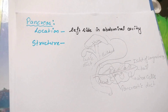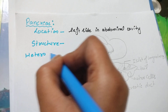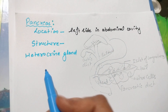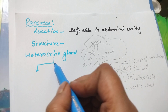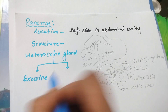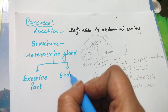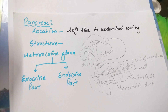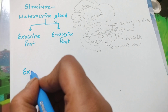Next important point is that pancreas is a heterocrine gland. This means it has both types of parts. One is the exocrine part and the other portion will behave as the endocrine part. We will discuss both of them one by one, starting with the exocrine portion of pancreas.